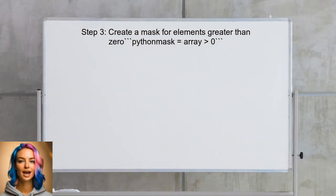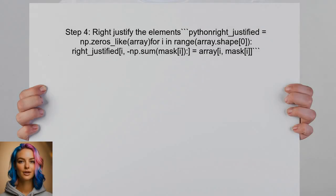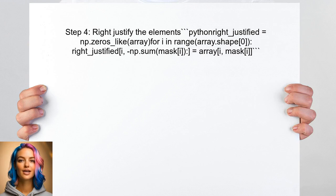Now, to right justify the elements greater than zero, the user can use a combination of NumPy functions. First, they will create a mask for the elements greater than zero. After creating the mask, the user can then apply it to the array and use the NumPy function to sort the non-zero elements to the right.